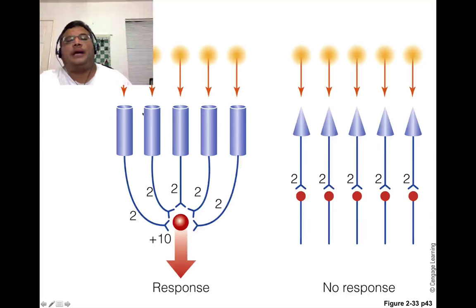If any one of these rods sees a photon of light, they're going to fire and excite this ganglion cell. Ultimately they're going to excite this ganglion cell. If enough of them see a light, then it'll send a response.